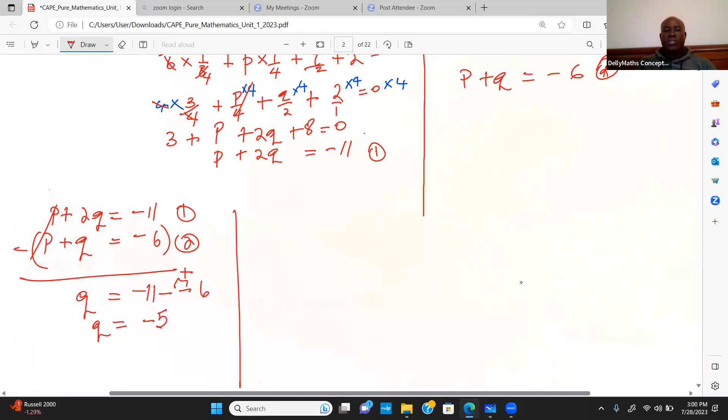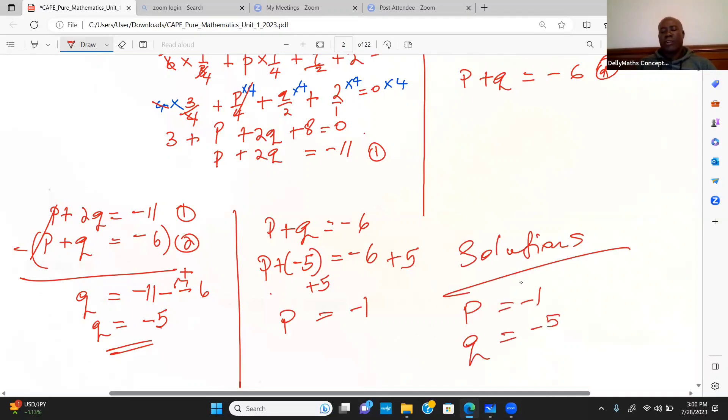Now, having known that q is negative 5, I could substitute that in any one of these. For example, p plus q is equal to negative 6. If I substitute negative 5 for q, then p plus negative 5, which is equal to negative 6. I'll be adding 5 to both sides, so p is equal to negative 1. I could write my solutions as follows: p is equal to negative 1, q is equal to negative 5.